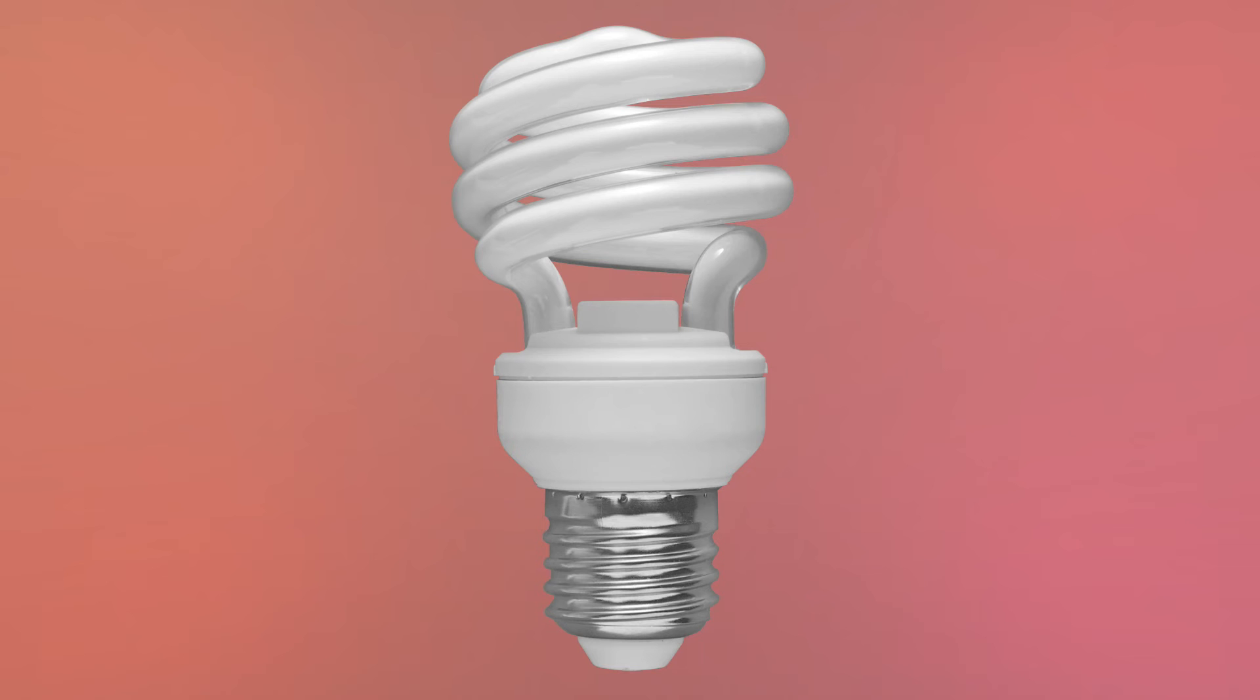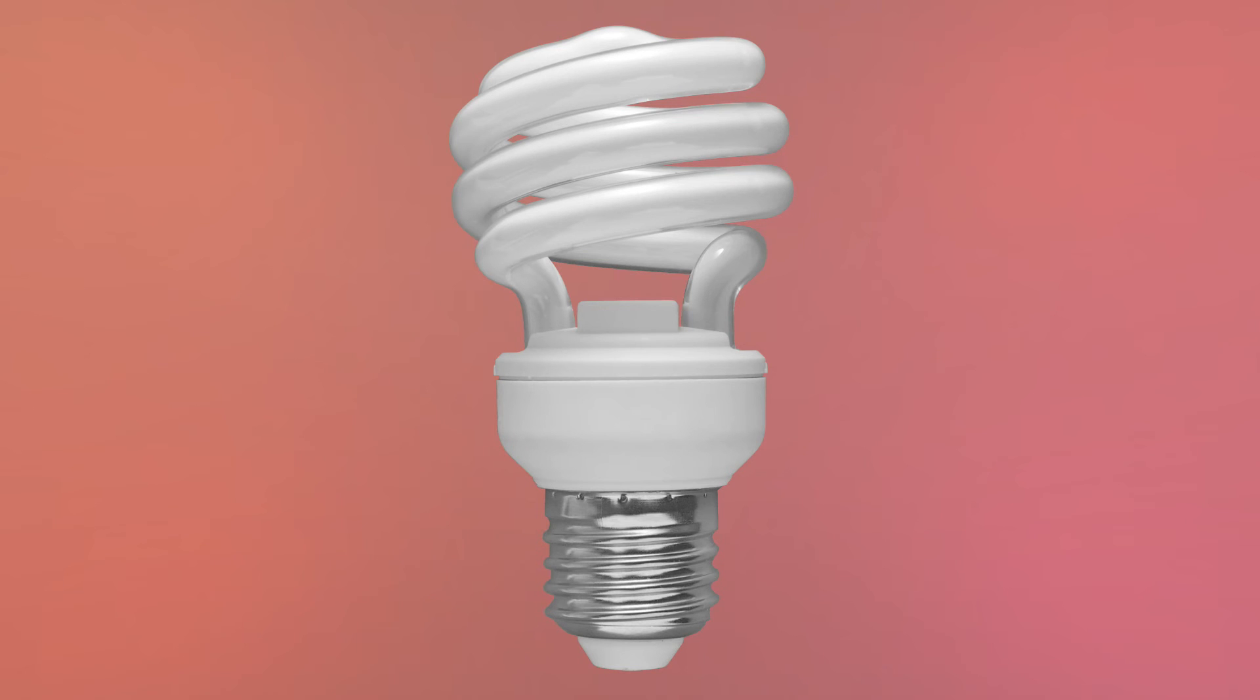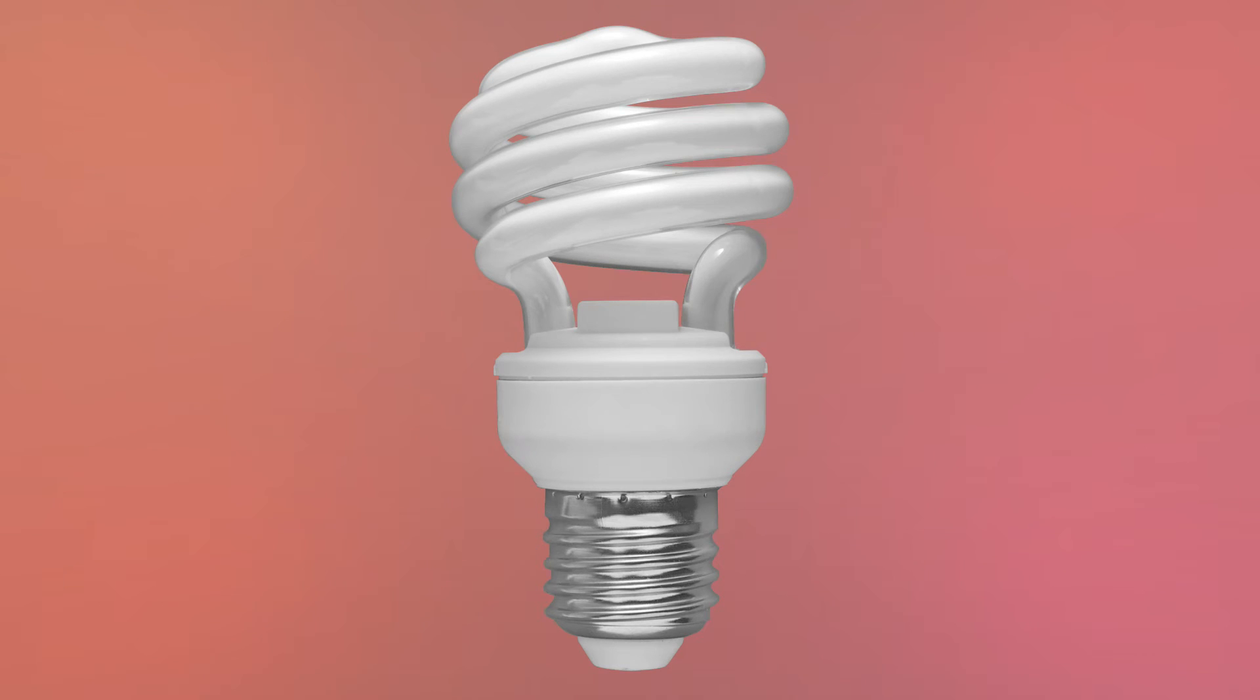Ever see a CFL? The light it makes looks like it's white, so clearly, as we've learned, it must emit all the colors, right? Not so. In fact, if you put a CFL through a prism, you can see a few strips of colors at very specific wavelengths.